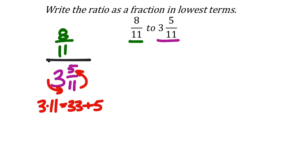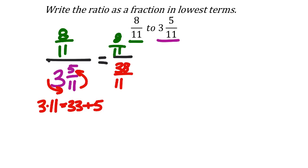With complex fractions, we don't usually use mixed numbers, so I need to change three and five-elevenths into an improper fraction using the cycle method: 3 times 11 is 33, plus the numerator 5 gives 38, keeping the denominator as 11. So three and five-elevenths becomes 38 over 11. Now I have 8 over 11 as the numerator.